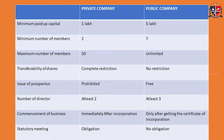Now let's look at the differences between a private company and a public company. The first factor is minimum paid-up capital: in the case of a private company the minimum paid-up capital is one lakh, and in the case of a public company it is five lakh. The minimum number of members for a private company is 2 and for a public company is 7. The maximum number of members for a private company is 50, and for a public company it is unlimited.